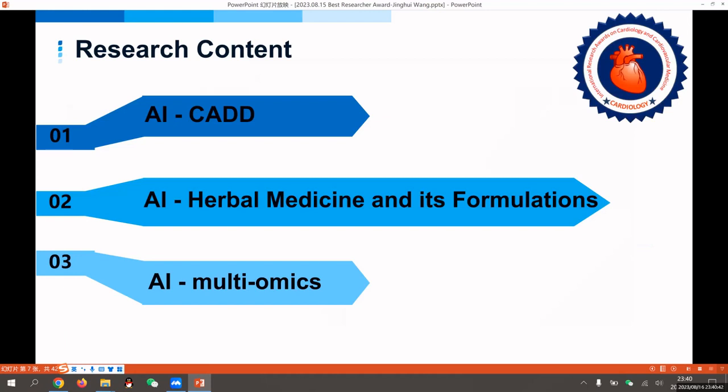The content we report today is mainly divided into three parts. The first is AI and CADD, the second is AI and herbal medicine and its formulations, the third is AI and multi-omics.